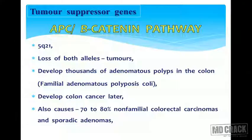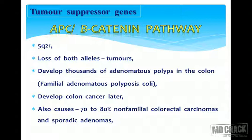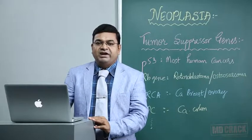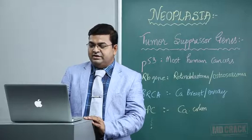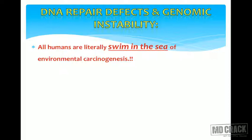Let us look at the APC gene and beta-catenin pathway, which is very important for colorectal malignancies. The APC gene is the most extensively studied gene in humans and is located on chromosome number 5. Loss of both alleles is required to initiate tumor development. Thousands of adenomatous polyps are seen in such patients — a condition called familial adenomatous polyposis coli, requiring at least 100 polyps for diagnosis. Patients with this condition have a 100 percent risk of developing colorectal malignancies in the future, so prophylactic colectomy is performed.